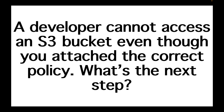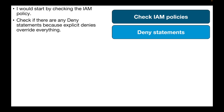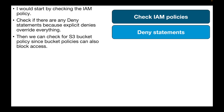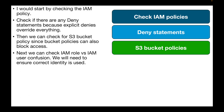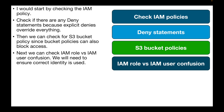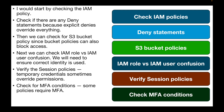The next question is: a developer cannot access an S3 bucket even though you attached the correct policy. What's the next step? Start by checking the IAM policy for any explicit deny statements, since explicit denies override everything. Then check S3 bucket policies, as they can also block access. Next, check for IAM role versus IAM user confusion and ensure you are using the correct identity. Verify session policies if temporary credentials are in use, as they can sometimes override permissions. Finally, check MFA conditions, as some policies require MFA. Most commonly, bucket policies are overriding IAM user permissions.